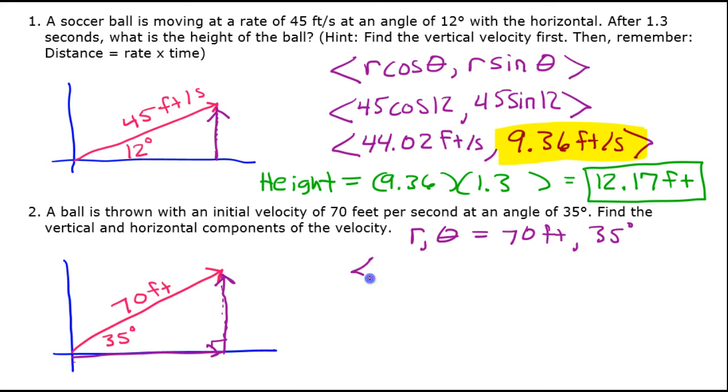That will give me the horizontal component and then the vertical component. So r cosine theta in this case will be 70 cosine 35. And r sine theta will be 70 sine 35.